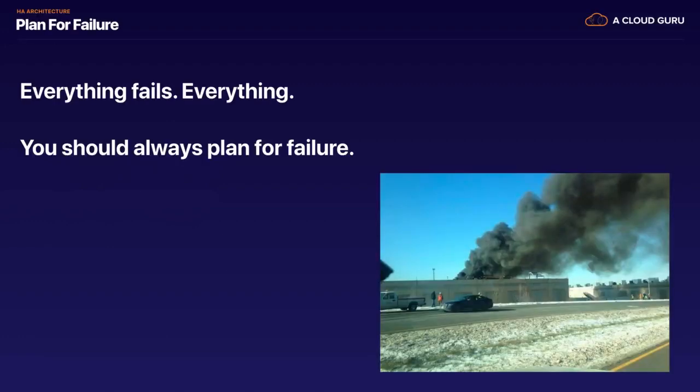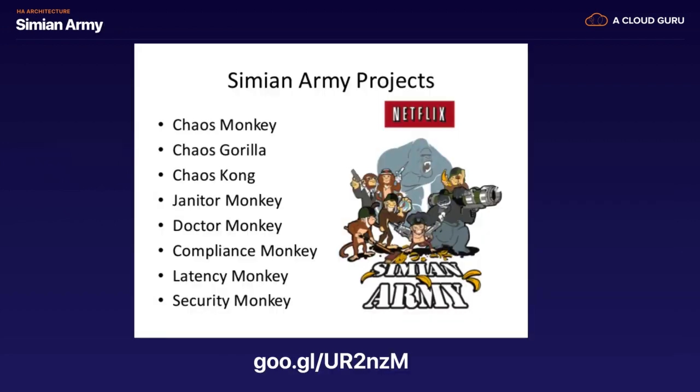The very first fundamental principle when thinking about HA Architecture is you need to plan for failure. Everything fails, literally everything, and you should always plan for failure. This is a real picture of one of Amazon's data centers on fire. Now this data center was actually under construction, it wasn't a live one, but one of their data centers did catch fire - I think it was in Virginia. Natural disasters and things do happen, so you should always plan for failure.